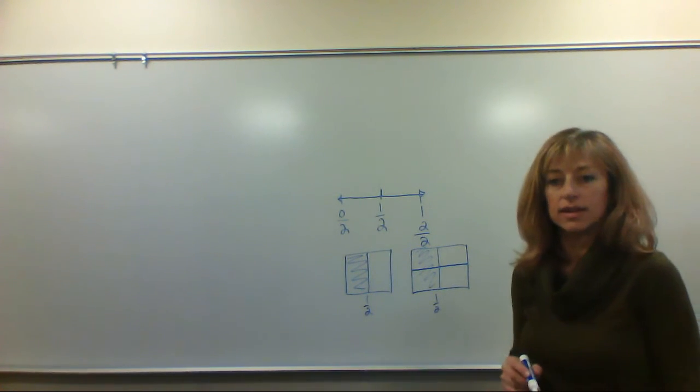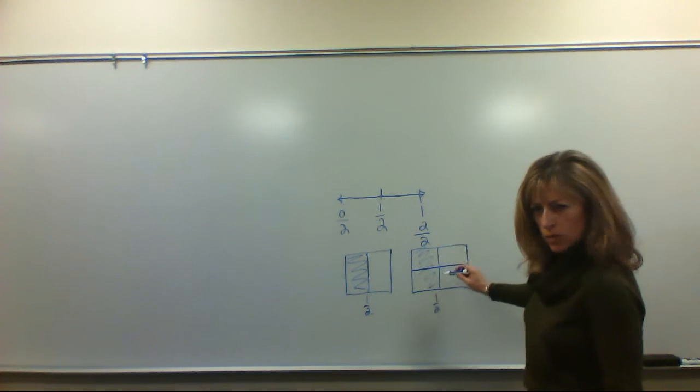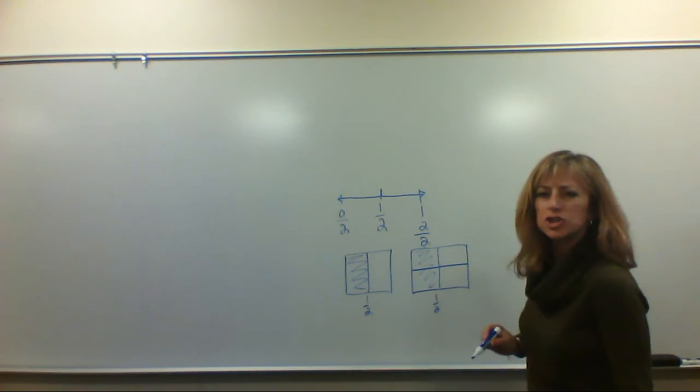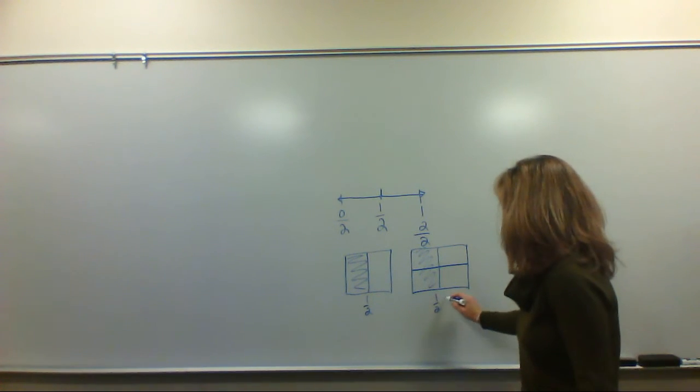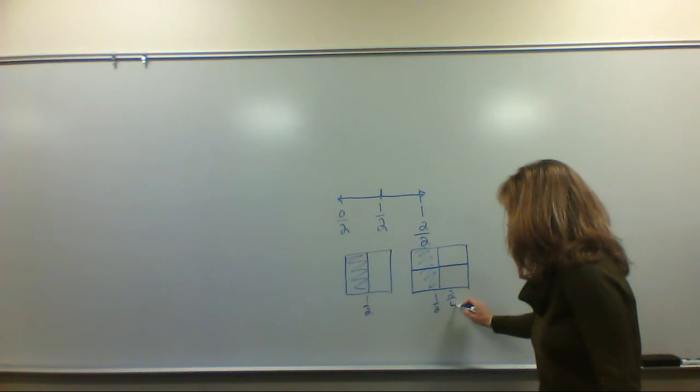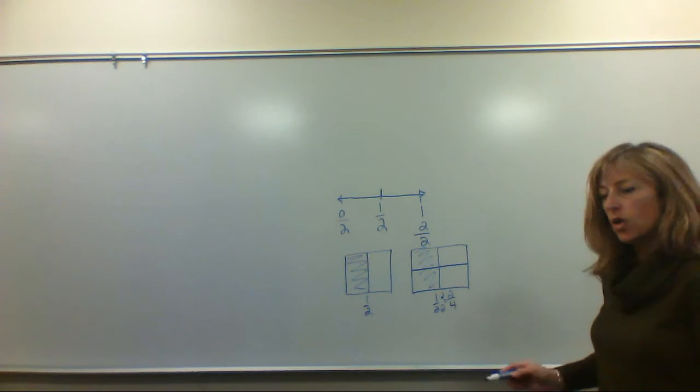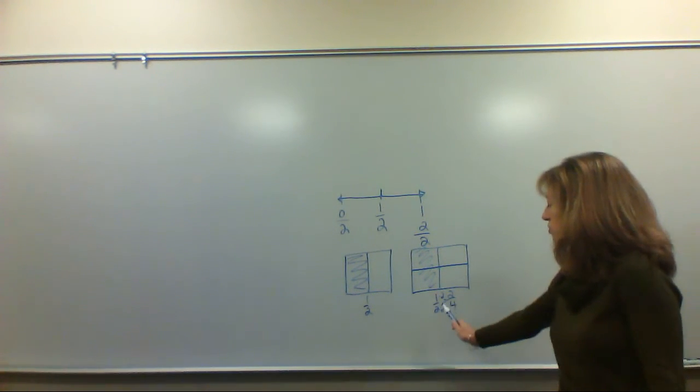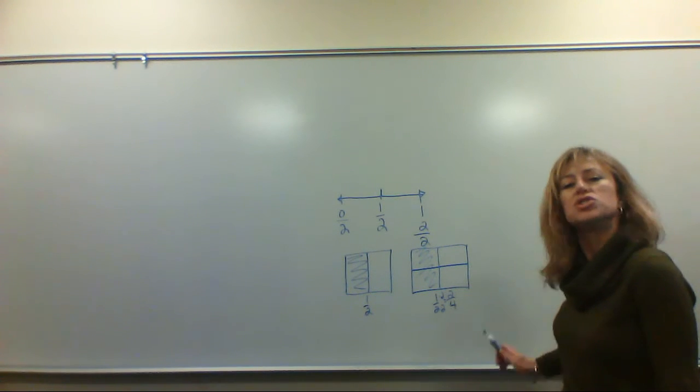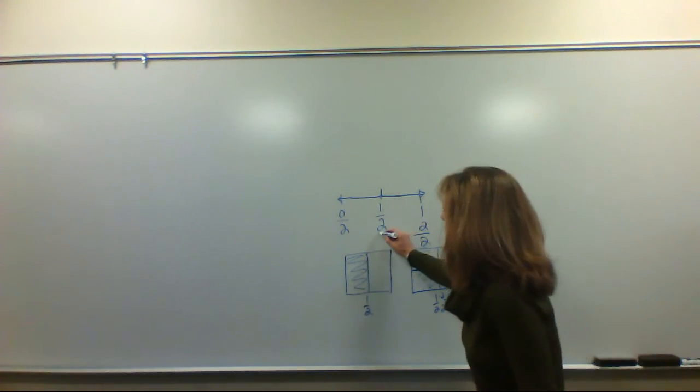But what were to happen if we drew another square the same way but this time we partitioned it through the center horizontally. Is this still one half? How many pieces are shaded? Two pieces are shaded out of how many total? Four. We partitioned this into two more pieces. So one times two is two, two times two is four. We've doubled everything. Is two-fourths equivalent to one half? Sure. It would go here on the number line.